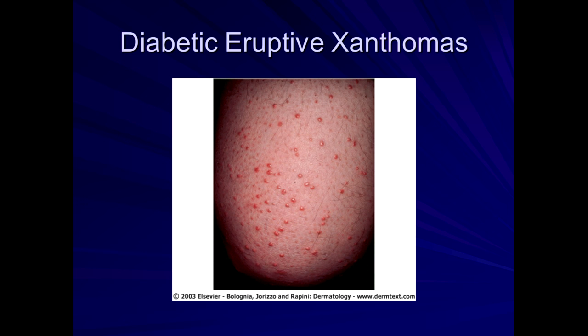These eruptive xanthomas — very sudden and quick — actually look red and pink at the base but are yellow in color up close. About 50% of xanthomas in general are associated with hyperlipidemia. Controlling glucose and lipid reduction does help reduce the lesions, but it doesn't eliminate them.